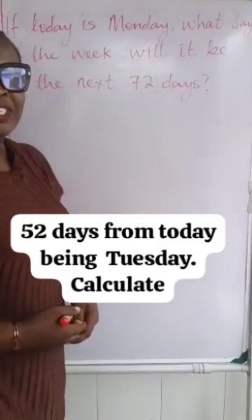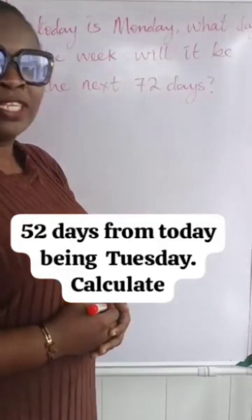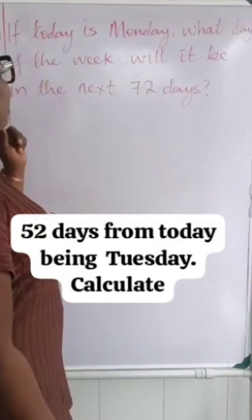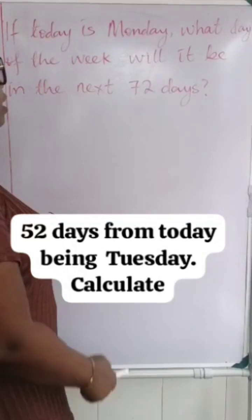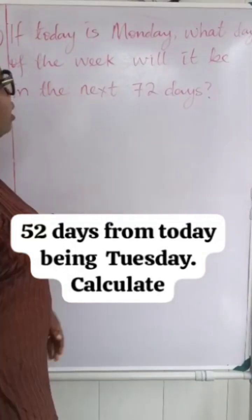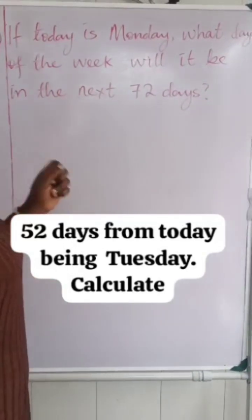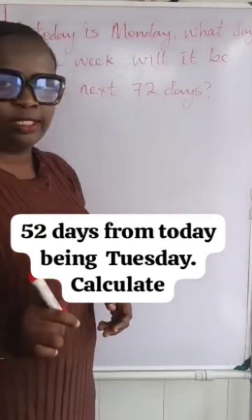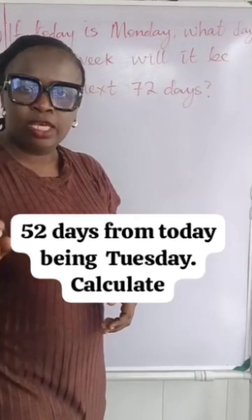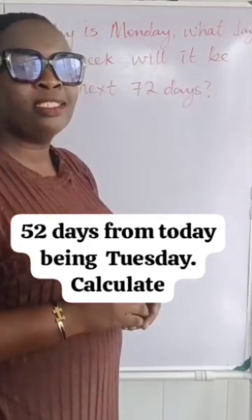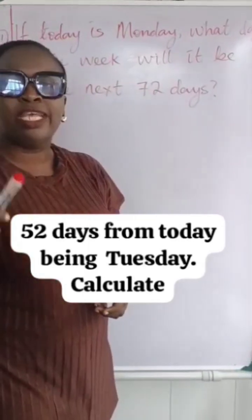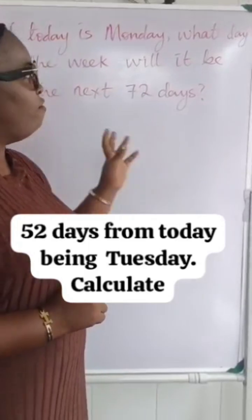Let's look at this question on the board. It says, if today is Monday, what day of the week will it be in the next 72 days? Assuming today is Monday, in the next 72 days, what day of the week will it be?